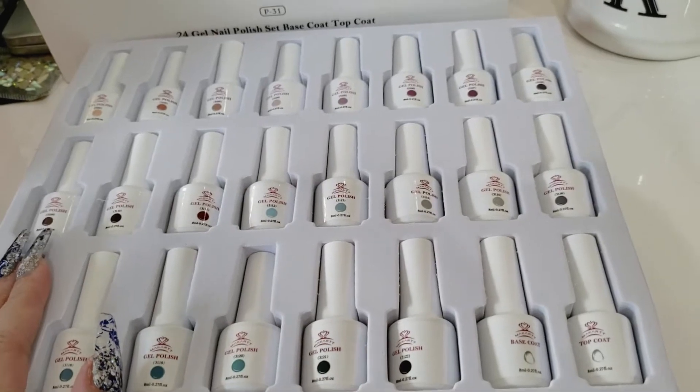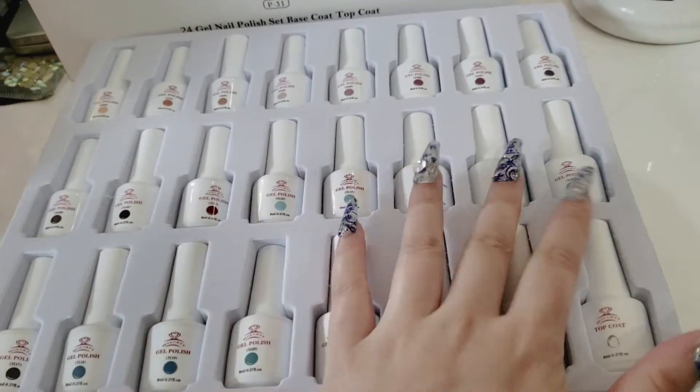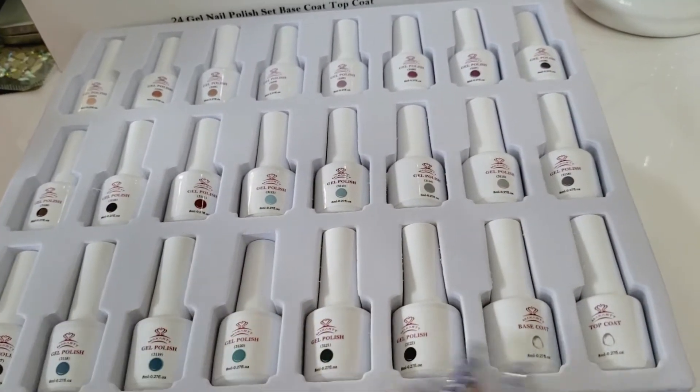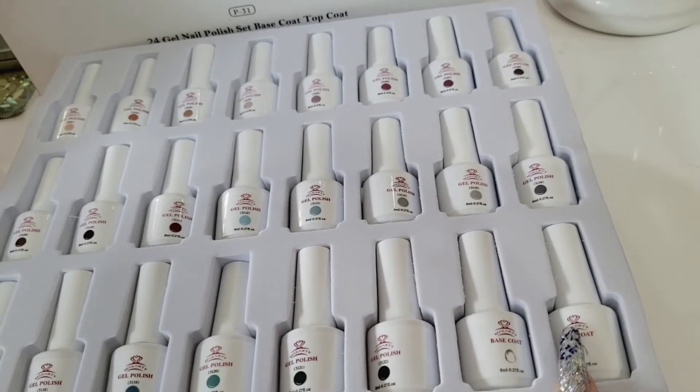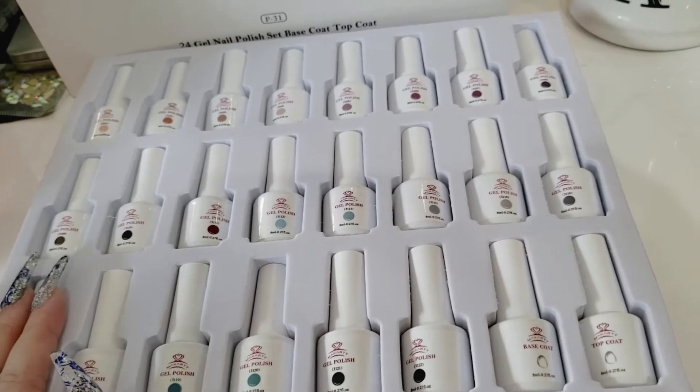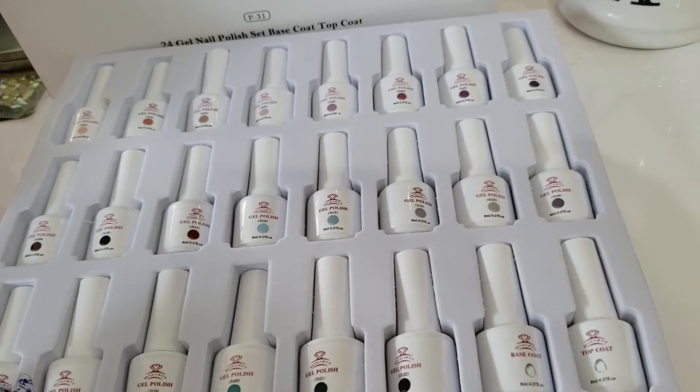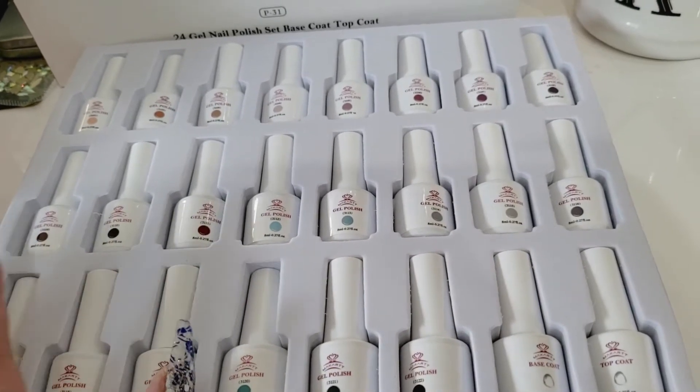Okay, just one more thing I forgot to mention. It comes with 22 gel polishes and I believe a top and base coat. So basically, it comes with almost everything you need except for your UV or LED lamp. And let's get to swatching.